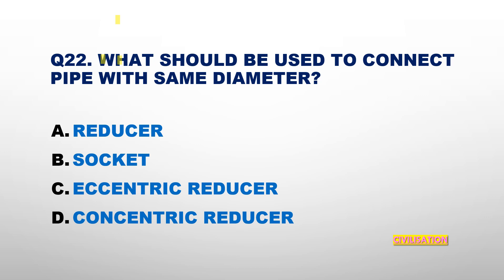Question number 22: What should be used to connect pipes with the same diameter? Options: Reducer, Socket, Eccentric Reducer, or Concentric Reducer? The answer is Socket.